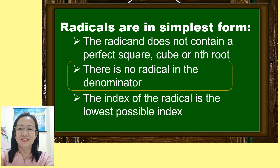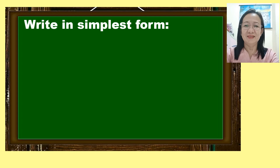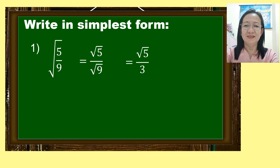Come on, let us start! Try to follow the process of writing radicals in simplest form through the following examples. Example number 1: our given is the square root of 5 over 9. Observe that the fraction 5 ninths is under the radical sign. So first, let us separate the numerator and the denominator. It is now square root of 5 over the square root of 9. Observe that the denominator is a perfect square, so getting the square root of 9, which is 3, we get square root of 5 over 3. This is the simplest form because the denominator is not under the radical sign.